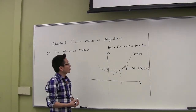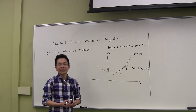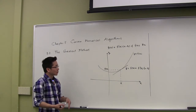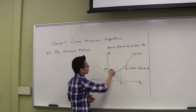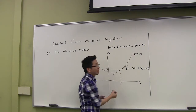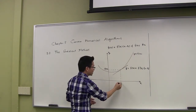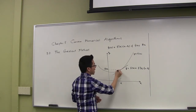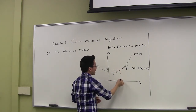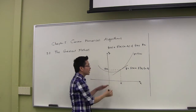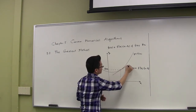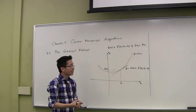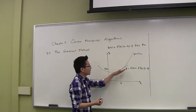In order to discuss the convergence of the gradient method, we need some supporting results on convex functions. In this figure, this is the graph of a differentiable convex function. If we pick a point x-bar in the domain of the function and draw the tangent line at the point (x-bar, f(x-bar)), this tangent line lies below the graph of the function f.